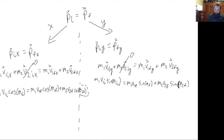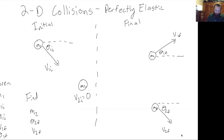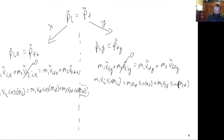Now to be careful about directions — if positive x is to the right and positive y is up, then all our x-components are to the right, but the final velocity for mass 2 in the y-direction is negative. So in our y-momentum equation, certain terms are negative. The signs matter because momentum is a vector, so we have to keep track of what direction that vector is pointing.